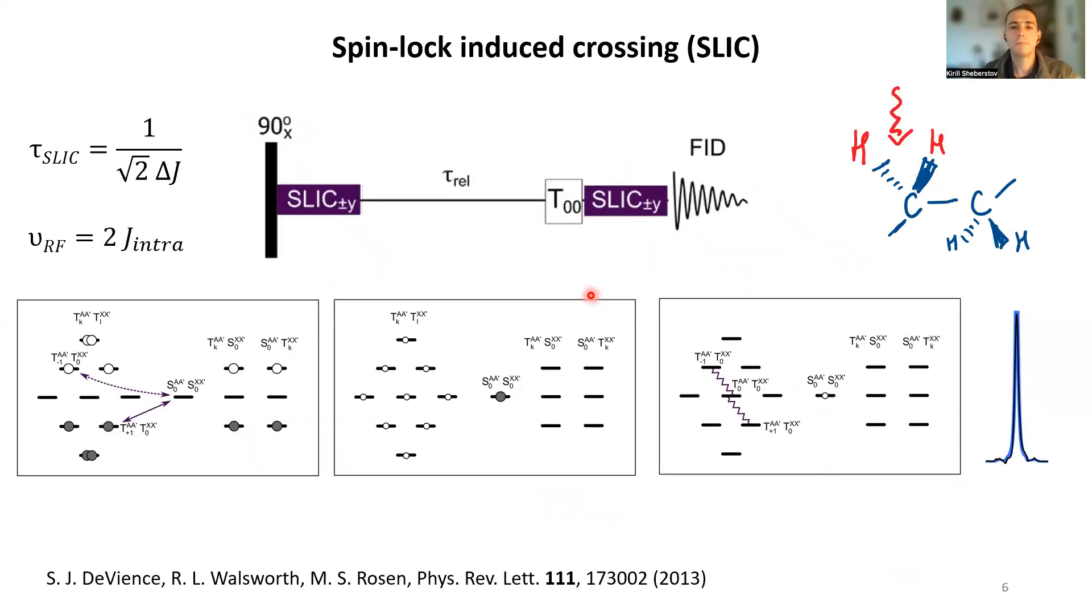Now, how actually are these types of experiments, singlet state experiments, performed? There is a very simple and elegant pulse sequence which is called spin-lock induced crossing. It was introduced by Stefan DeVienne and Matthew Rosen around 10 years ago. Indeed, this is a very simple sequence.